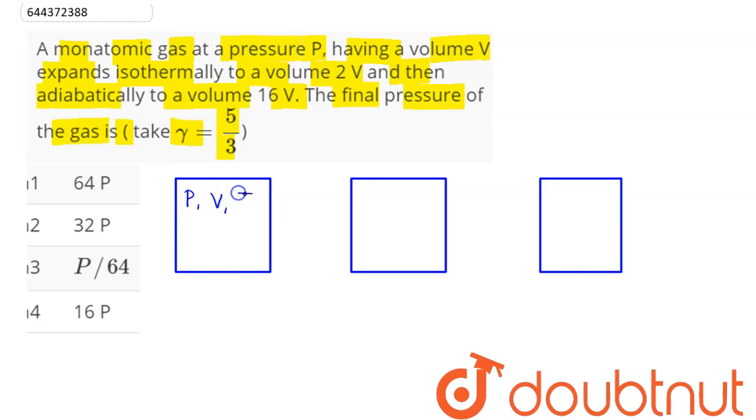So initial pressure is P, volume is V and temperature is T. Now on expanding isothermally, that is temperature remaining constant, volume becomes 2V. This is isothermal expansion and temperature remains constant at T and volume becomes 2V.